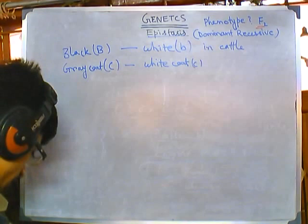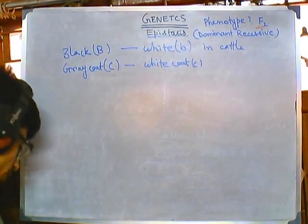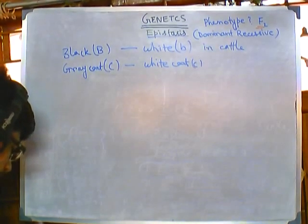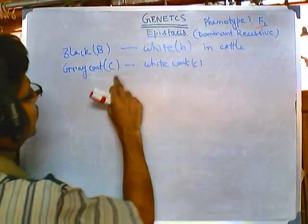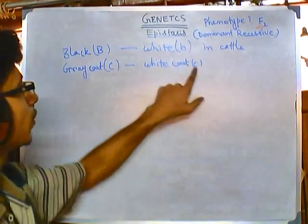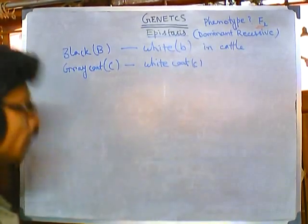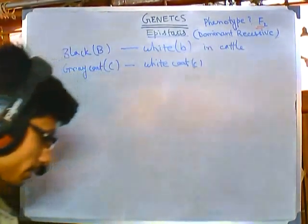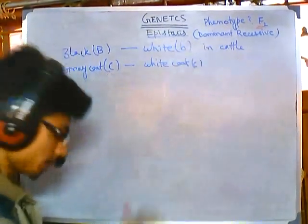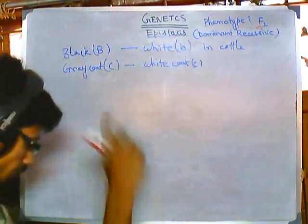Here cap C is dominant over small c, and small c small c is epistatic. Both cap C and small c are epistatic genes. In recessive epistasis we have only small c being epistatic, but here both of them are epistatic. Cap C is a dominant epistatic and small c is a recessive epistatic, but both of them control the activity of caps B and small b.